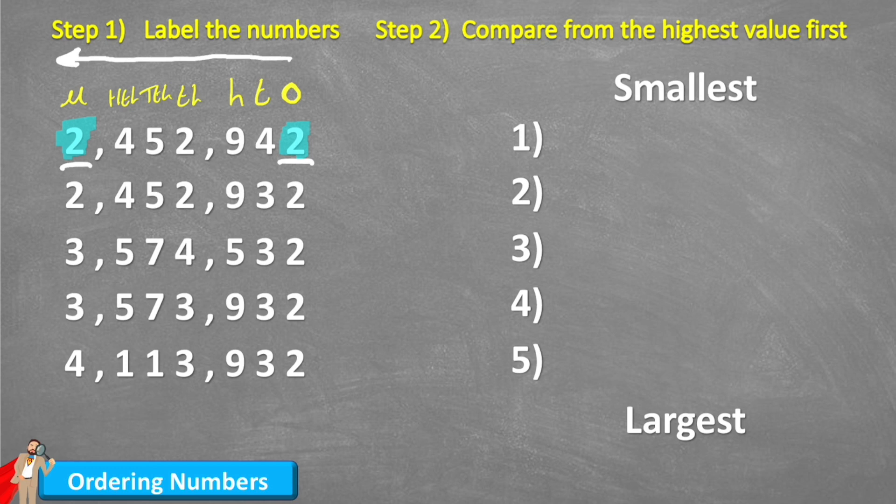So now we can look at step two, which says to compare from the highest value first. And as we discussed, everything over on this left-hand side has the highest value. So in this case, our highest value is actually on the millions column. And as today we are looking from the smallest to the largest, which we call the ascending order. The opposite from largest to smallest is the descending order. So this is the ascending order, and because we're looking for the smallest, I'm looking for the smallest value in this millions column. Well, I have a two, a two, a three, a three, and a four. So obviously my two twos are the smallest value.